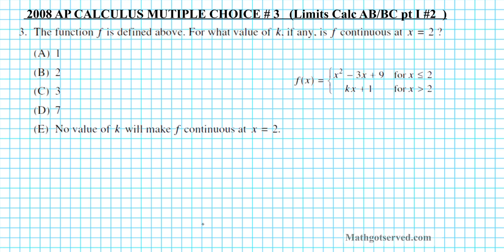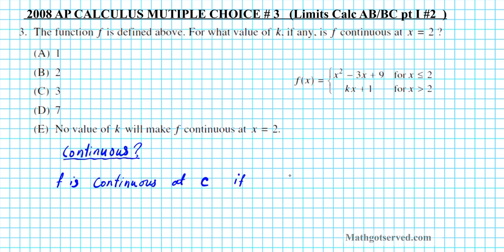Before we solve the problem, let's do a quick review on continuity. What does it mean for a function to be continuous? A function f is continuous at some c value if three conditions hold. Condition number one is that the left-hand limit at c has to be equal to the value of the function at c, and it has to be equal to the right-hand limit at c.